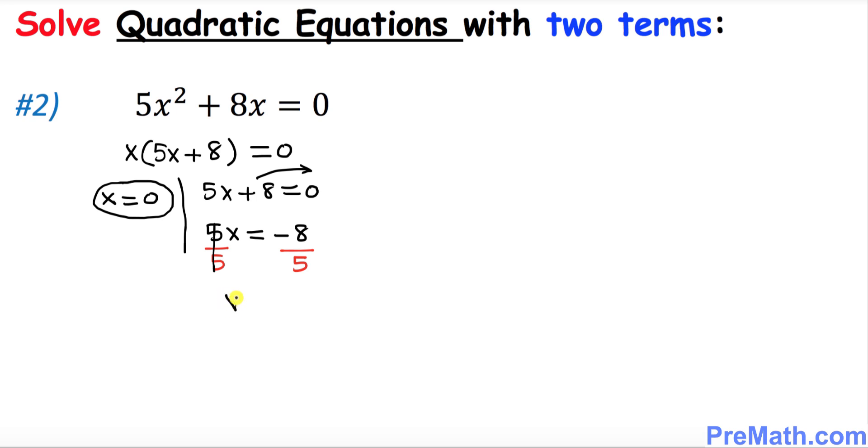Thus our solution set turns out to be x = 0 and the other solution is x = -8/5, and that is our answer. Thanks for watching and please subscribe to my channel for more exciting videos.